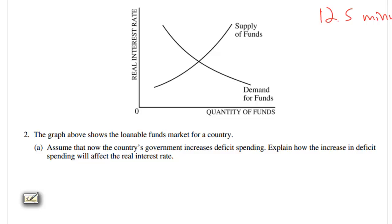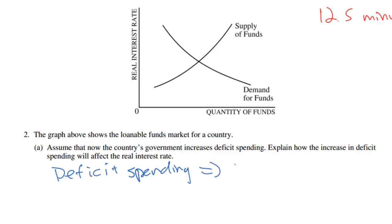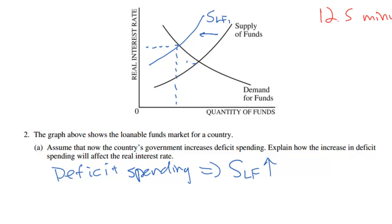We actually had a very similar question in our previous long FRQ. Just like in the previous question, the increase in deficit spending will lead to a decrease in the supply of loanable funds. The reason for that is that the government must raise the interest rate it offers on its own bonds, which will attract savings away from the loanable funds market. So the supply of loanable funds decreases, causing a higher equilibrium interest rate. This is known as the crowding out effect.